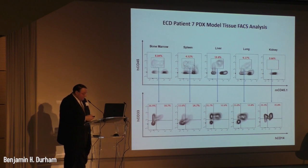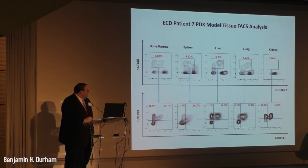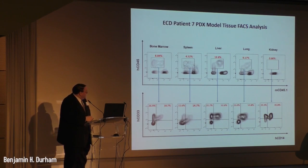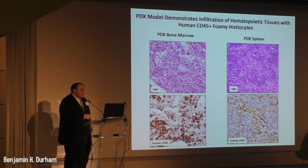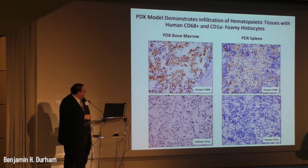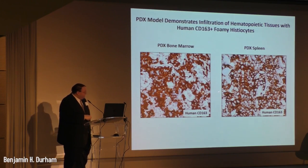After sacrifice, we saw higher percentages of human CD45-positive cells in the bone marrow, spleen, liver, lung, and kidney. A large proportion of these cells also expressed the human monocyte-specific marker CD14. By histology and immunohistochemistry, we saw infiltration of the bone marrow and spleen by large mononuclear cells with pink foamy cytoplasm that were human CD45-positive. These infiltrating cells were positive for human CD68 and negative for human CD1A — confirming they were foamy histiocytes of human origin. The monocyte-macrophage marker human CD163 was also present on many of these cells.